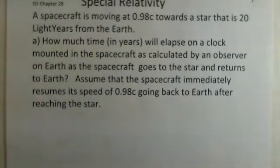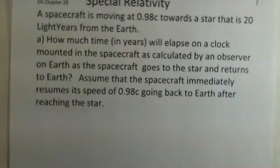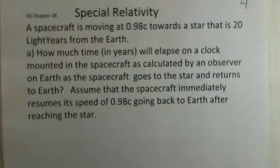Professor Clements with you as we consider special relativity and the twin paradox. So a few of the calculations related to that. Let's take a spacecraft moving at 0.98 times the speed of light towards a star that's 20 light years from Earth. We're going to break down this calculation into various steps.